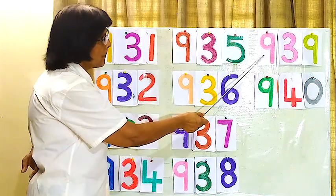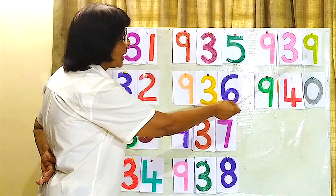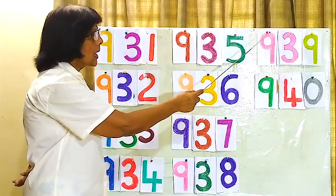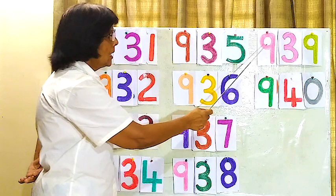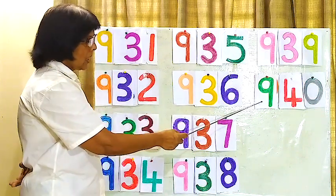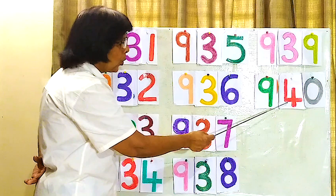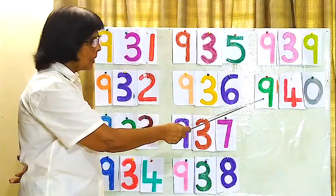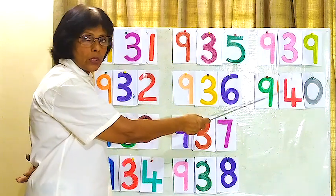Last two numbers, 939, 939, 939, 939, 939. Last one, 940, 940, 940.